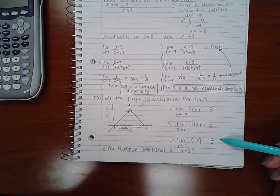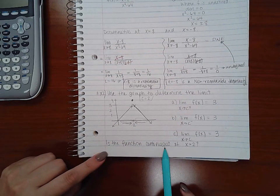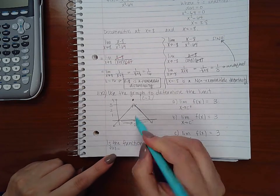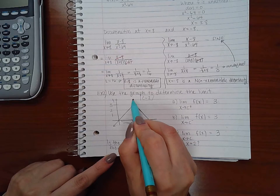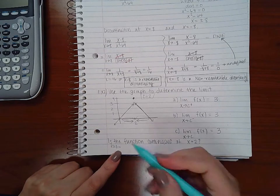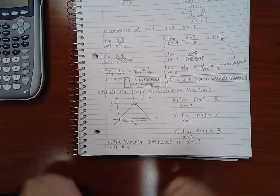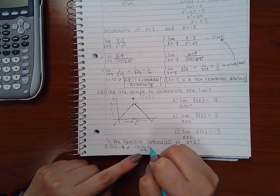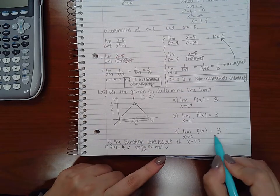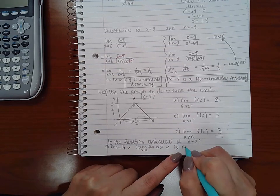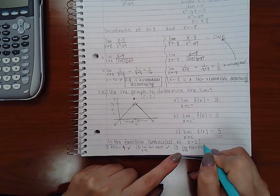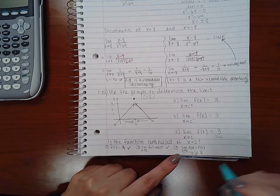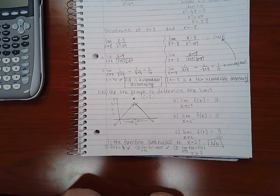So it asks me, is the function continuous at x equal to 2? Remember the three criteria: f of 2 has to exist. When x is equal to 2, the y value is defined there and it is 4. That was the first criteria, so we meet the first criteria, f of 2 is defined, it's 4. The second criteria is does the limit as x goes to 2 of f of x exist? Yes it does, it's 3. But then the third criteria is does the limit as x approaches 2 of f of x equal f of 2? In this case the limit here is 3 but the y value here is 4. They do not equal, therefore the answer is no, it is not continuous at x equal to 2.